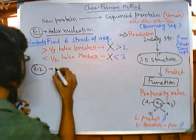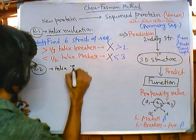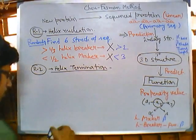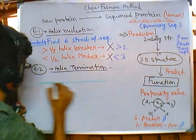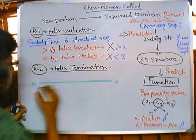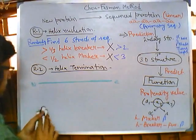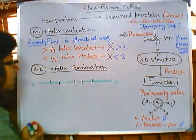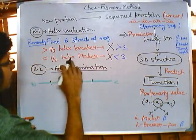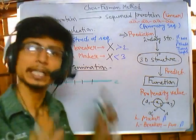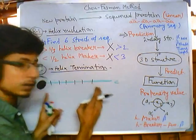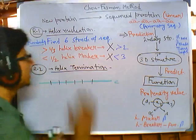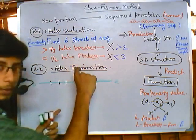The second rule after helix nucleation is helix termination. Once a six-residue stretch is identified as having the potential to form alpha helix — for example, five helix makers and one helix breaker — this segment of the protein can form alpha helix because it fulfills the first rule. They then look for extension of the helix in both directions.